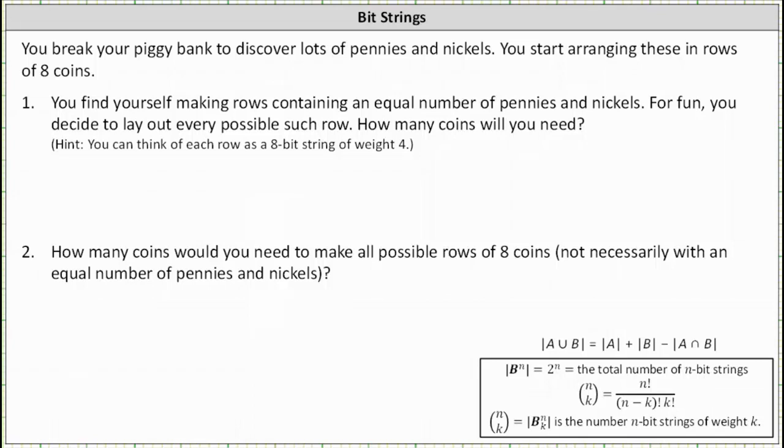You break your piggy bank to discover lots of pennies and nickels. You start arranging these in rows of eight coins. For number one, you find yourself making rows containing an equal number of pennies and nickels.